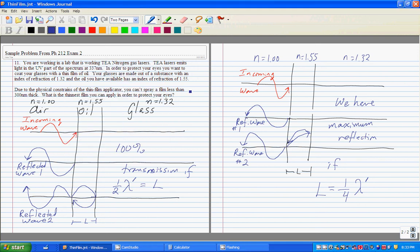Okay, here we are in part two of this sample problem. To refresh our memory, we are trying to find the thicknesses of oil which will cause total reflection of this particular wavelength of light.